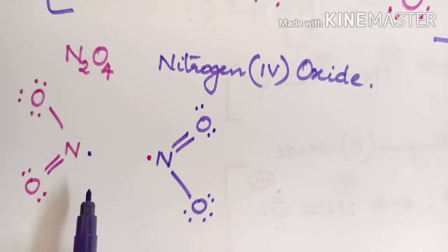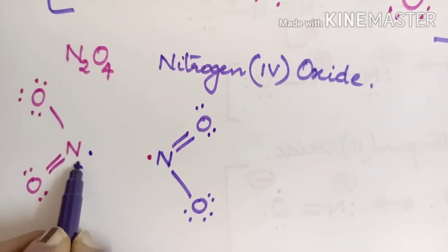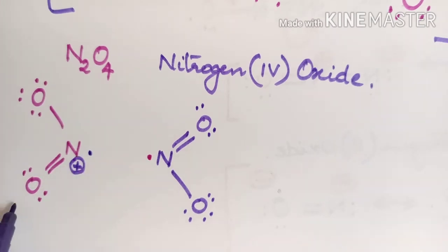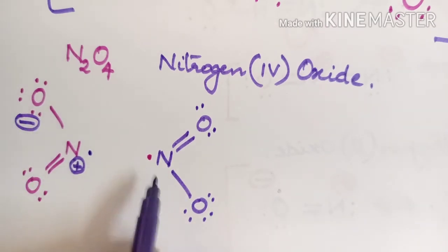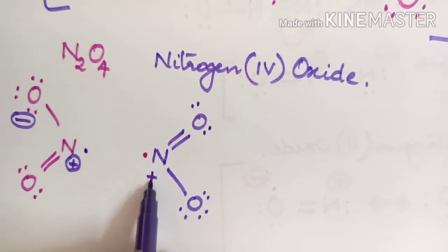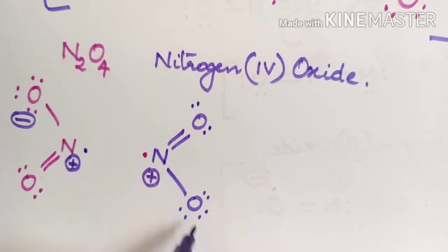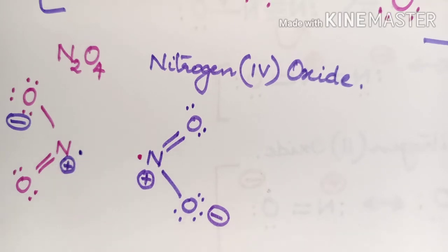When two NO₂ molecules come close by, both of them are free radicals and so they combine together to form a stable molecule. Examining the structure, nitrogen carries a positive charge and one oxygen carries a negative charge; similarly, the second nitrogen carries a positive charge and its oxygen carries a negative charge. When they combine, they form a new single bond between the two nitrogen atoms.